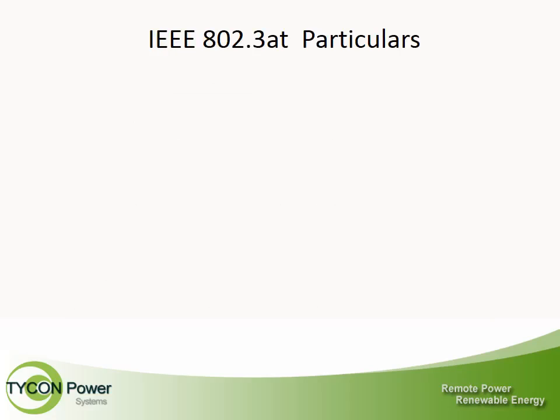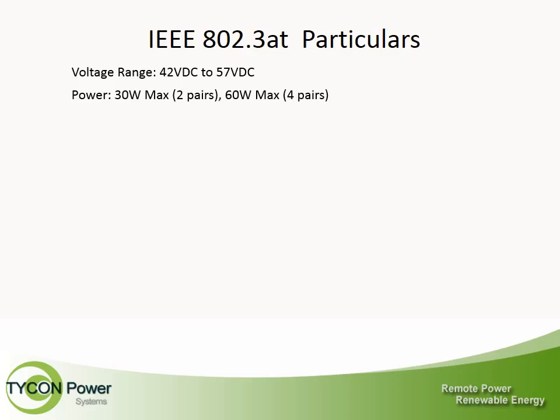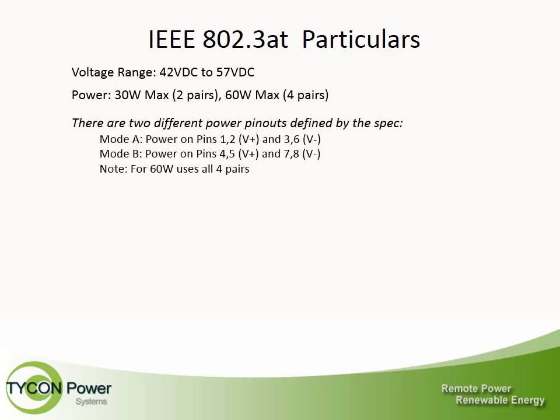802.3 AT particulars: The voltage range is again 42V DC to 57V DC. Power is 30W maximum on two pairs, or 60W maximum on four pairs. There are two different power pin-outs — Mode A and Mode B. Mode A uses pins 1 and 2 as voltage plus, and pins 3 and 6 as voltage minus. Mode B uses pins 4 and 5 as voltage plus, and pins 7 and 8 as voltage minus.